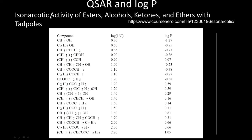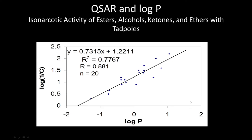QSAR and log P: log P is very important. For the narcotic activity of esters, alcohols, ketones, and ethers, as log P keeps changing, the activity also keeps changing. Various substituent groups come into the picture. As the series becomes more hydrophobic, activity also increases. The R-squared, which is a measure of fit, is 0.77, indicating a good fit — this is the QSAR equation as a straight line with x as log P and y as activity, with regression coefficient 0.88.